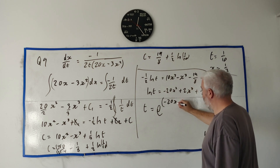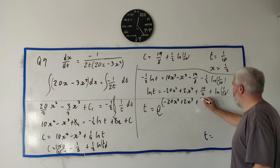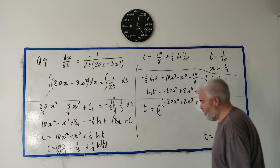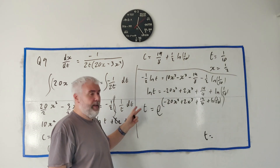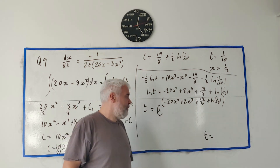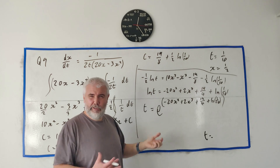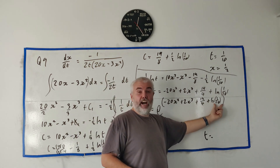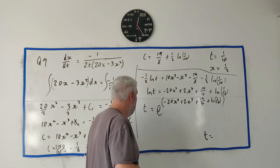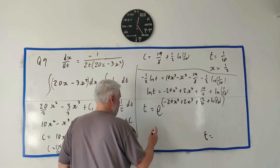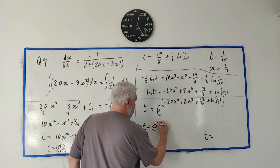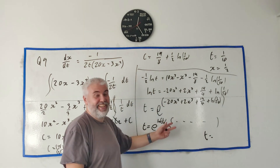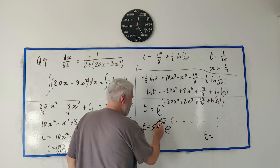Since adding ln(1/10) in the exponent is equivalent to multiplying by e^(ln(1/10)) = 1/10, we can simplify: t = (1/10) · e^(−20x² + 2x³ + 19/4). Either form is a valid answer — they don't quibble about small simplifications like that.